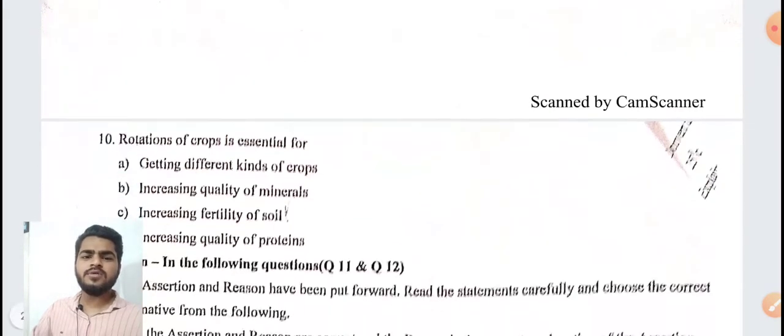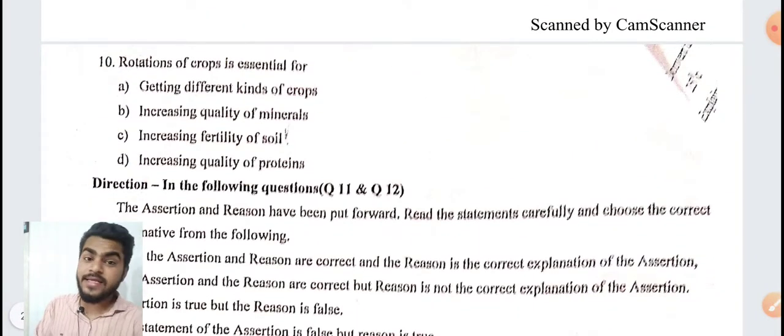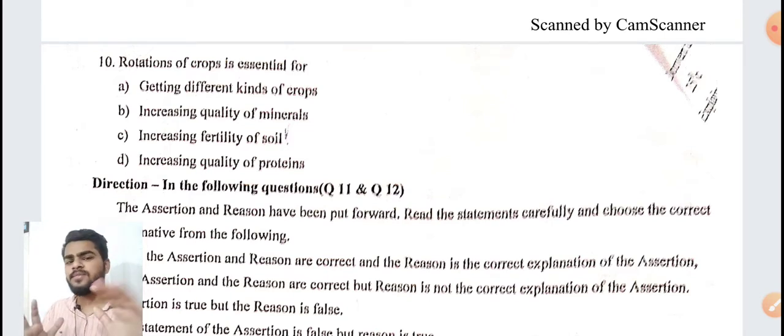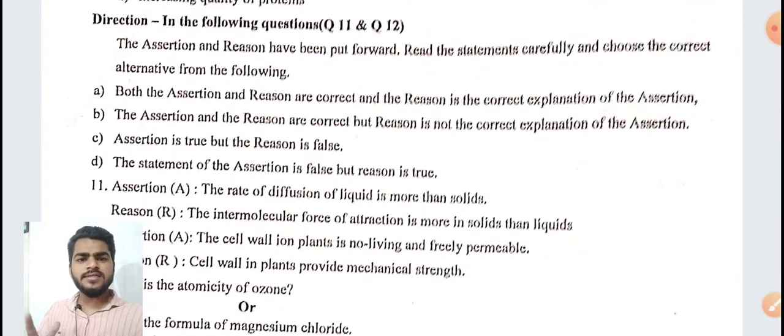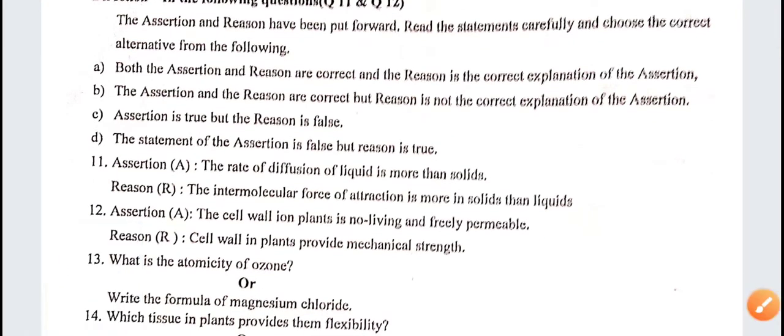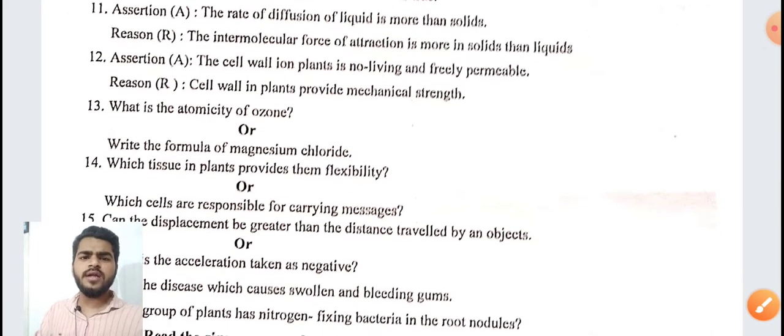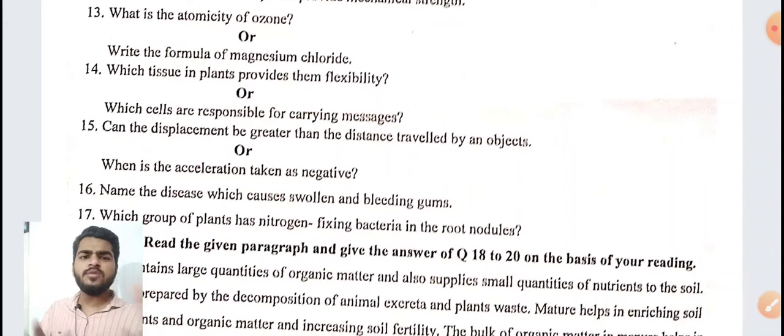The answer you have to just write it down in comment section by yourself so that you can have a good practice. In the final exam you can do the total paper. Rotation of crop is essential for increasing quality of soil. You have to write the formula of magnesium chloride: MgCl2.